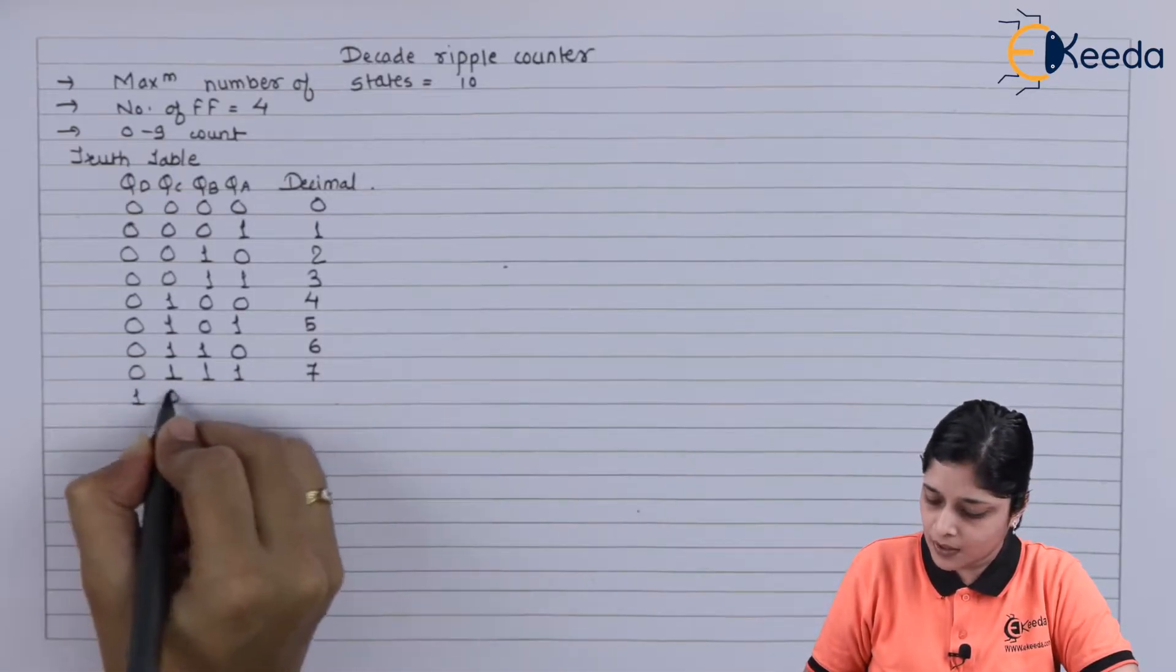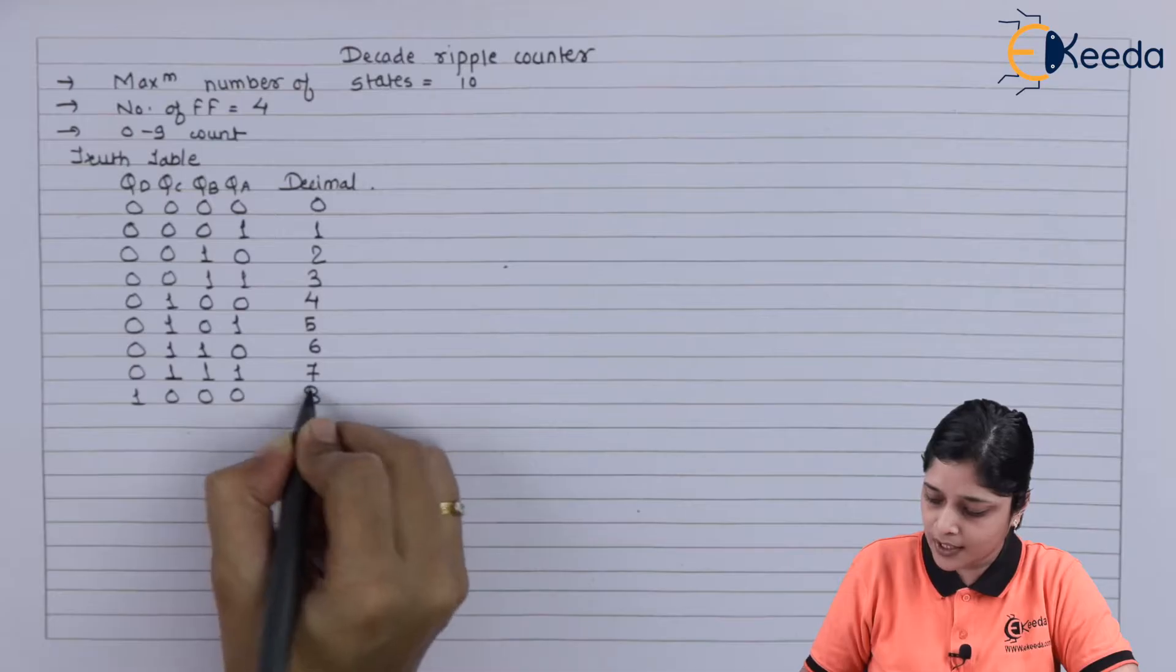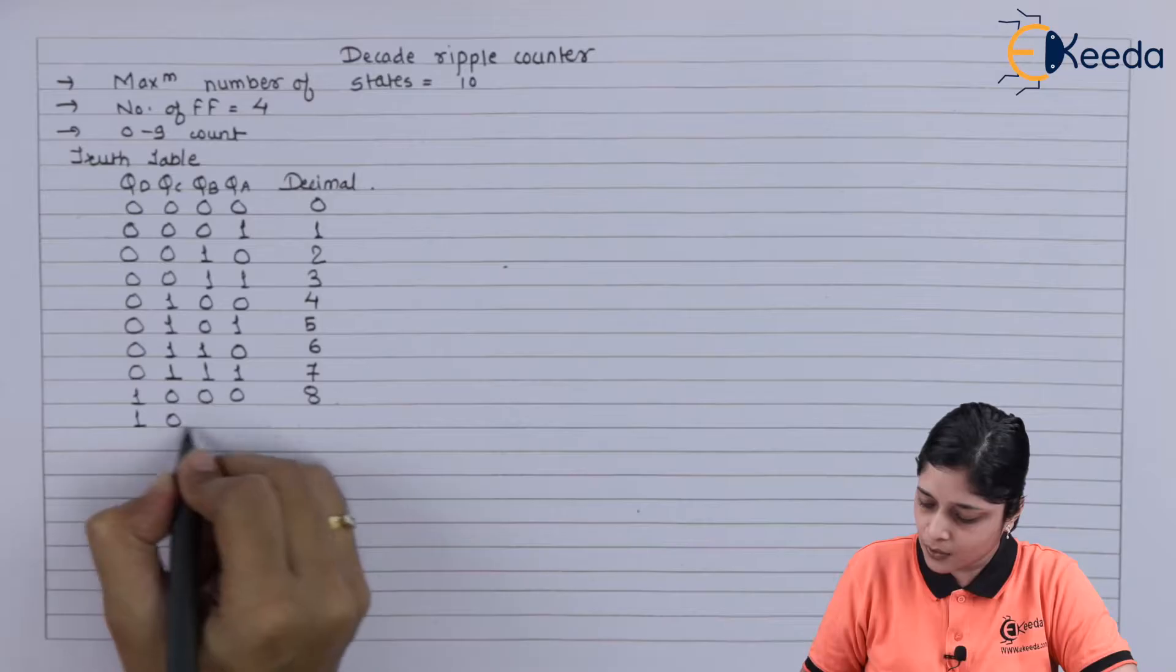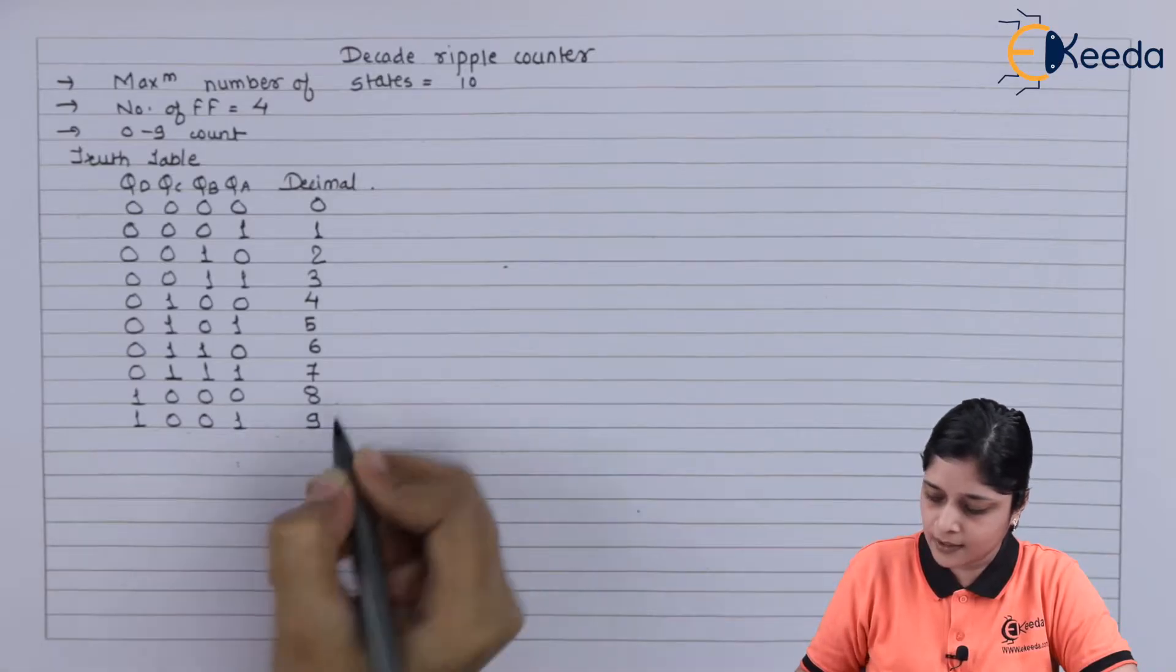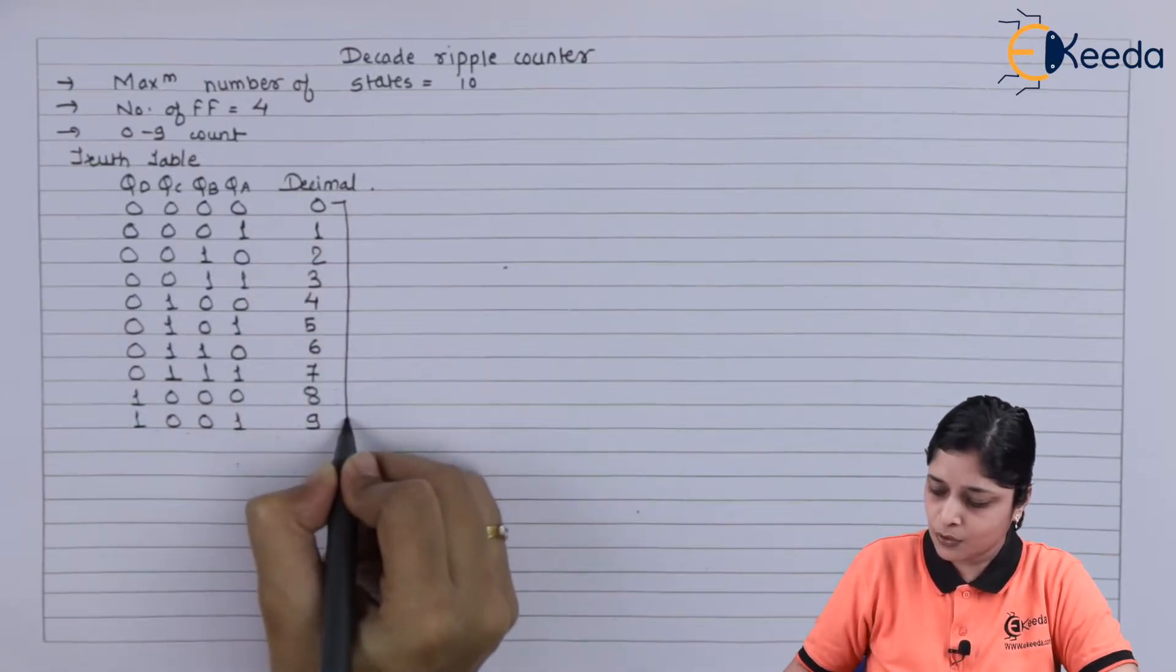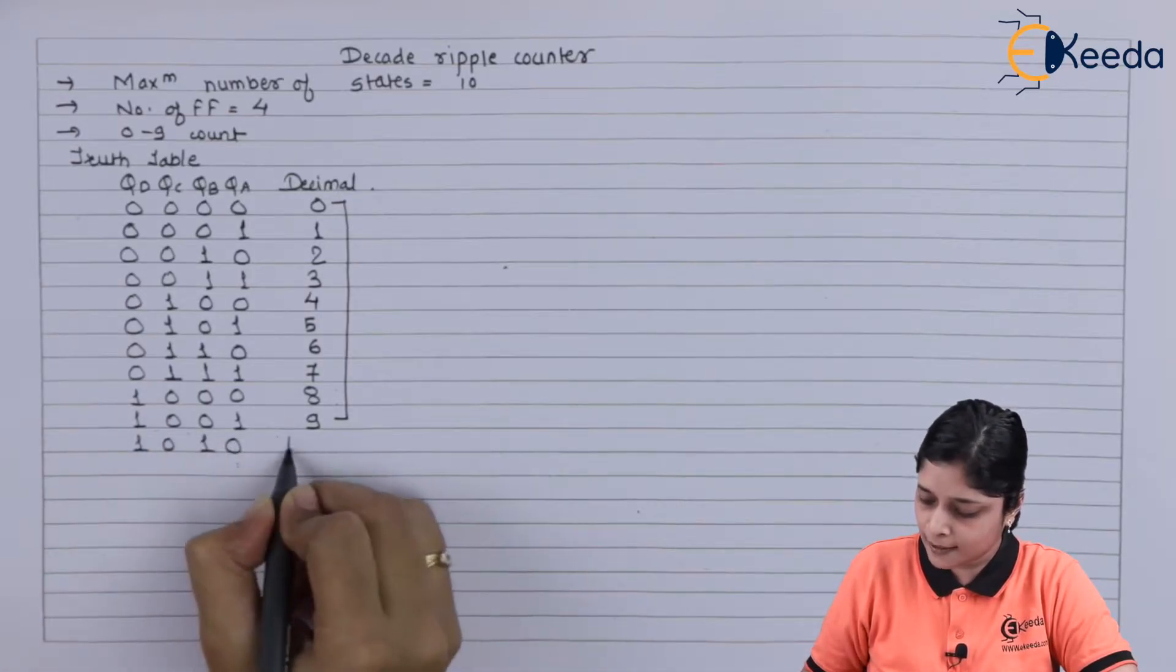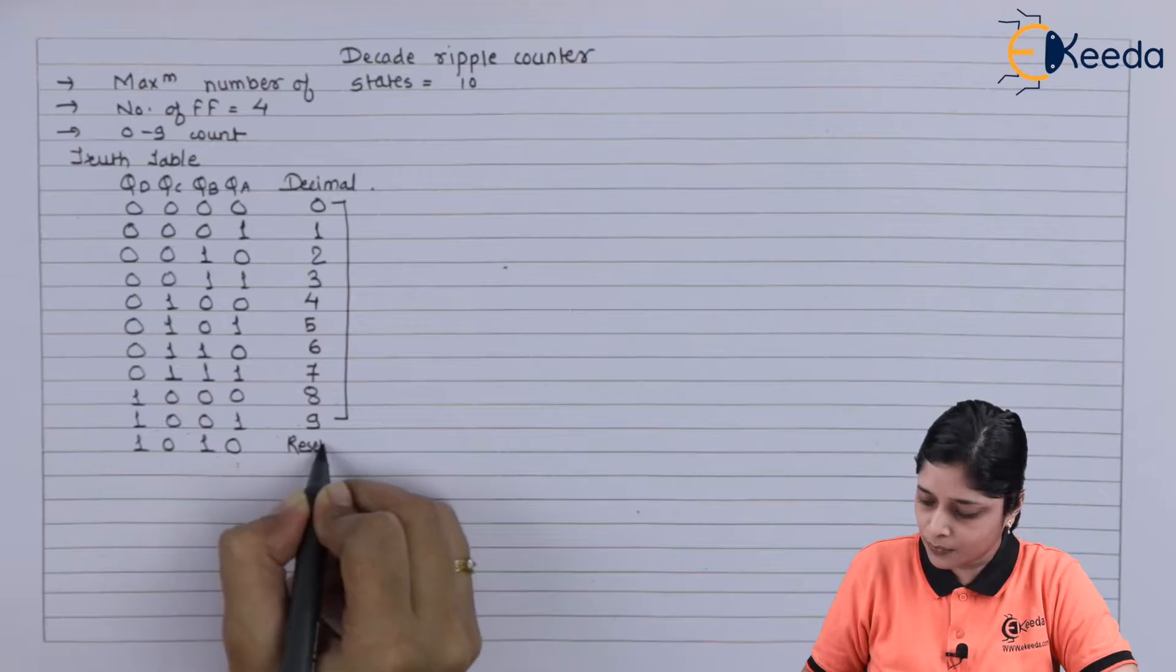Then 1000 for 8. Up counting we are doing. And 1001 for 9. Means 0 to 9 you have to count. And for 1010, that is 10, you have to reset the flip flop.